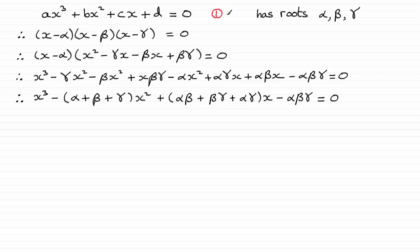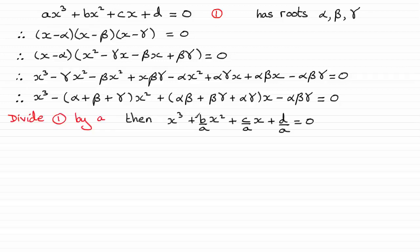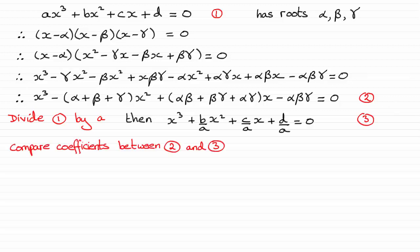Now, if I label this equation 1 and divide through by a, then what we're going to get is this equation here: x cubed plus b over a times x squared plus c over a times x plus d over a equals 0. Now, suppose I label this equation 2 and this one equation 3. What I can do now between these two equations is compare the coefficients. If we compare the x squared coefficients, you can see that the sum of the roots, alpha plus beta plus gamma, must be equivalent to minus b over a. I've written this for short as sigma alpha, which would be alpha plus beta plus gamma if I was to expand it out.